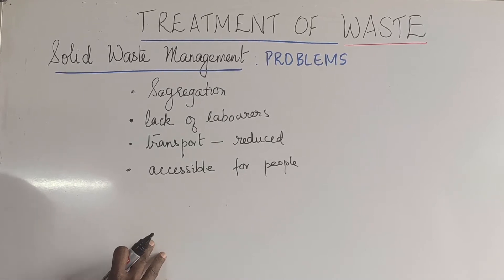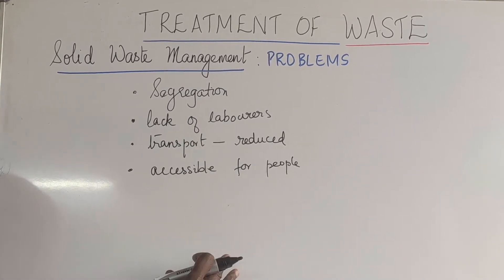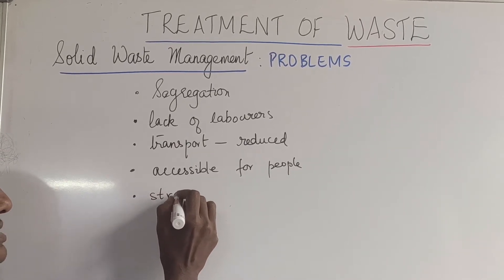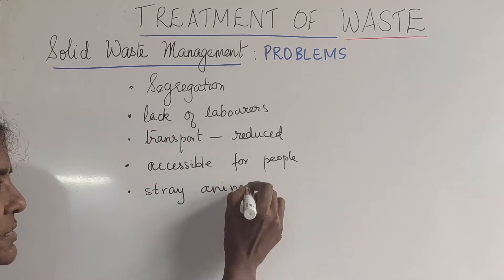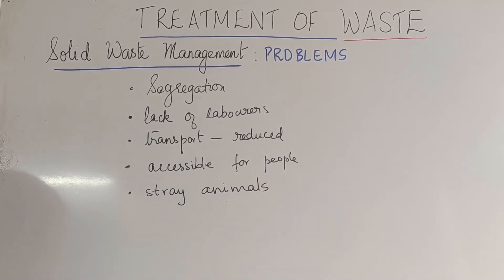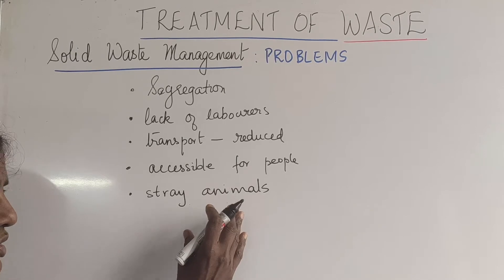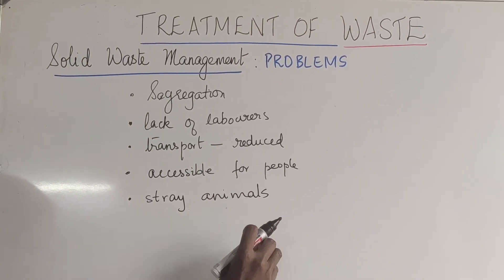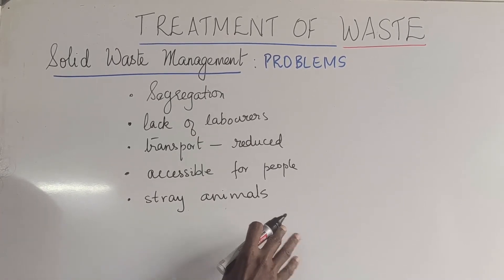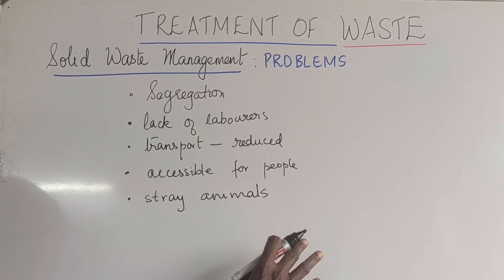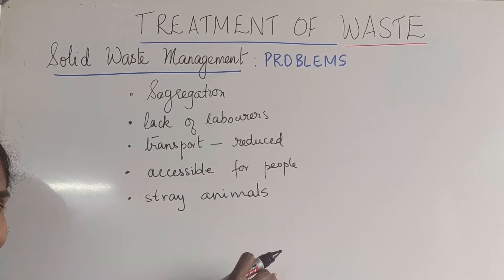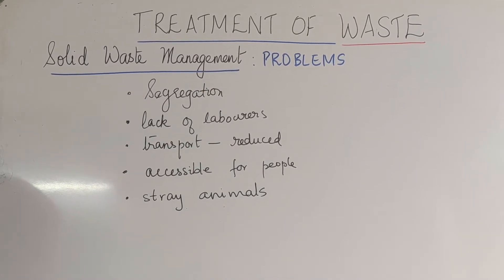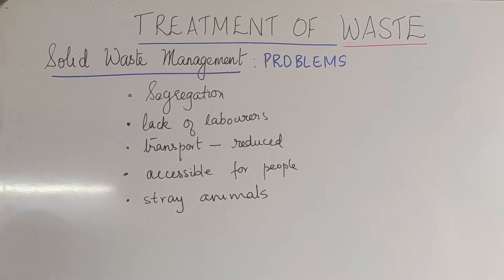Not only this — if you see the waste that is thrown out in open areas, you can also see stray animals that go into it. Dogs, cows, and other animals go and eat these things, and it could have a health impact. Things can develop in the animals, and if we happen to drink the milk from that cow, you can imagine how the chain just flows. So these are the problems that we face.